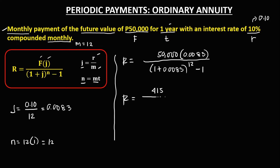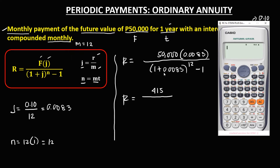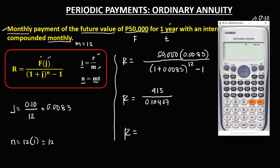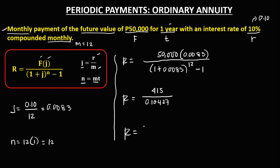So we have P415 over the denominator. For the denominator: 1 plus 0.0083 is 1.0083, to the power 12, then minus 1, equals 0.10427. So to find now the regular payment, we have 415 divided by 0.10427, equals 3,980.05. The regular payment is 3,980.05 pesos.